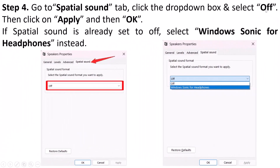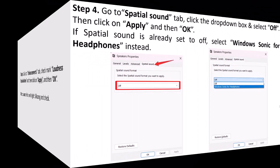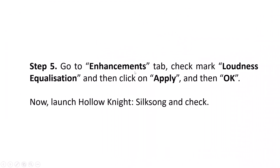Click the drop-down box and select Off. Then click Apply and OK. If Spatial Sound is already set to Off, then select Windows Sonic for Headphones instead. Then go to the Enhancements tab, check mark Loudness Equalization, and click Apply and then OK. Now launch Hollow Knight Silksong and check if the sound or audio problem is solved.